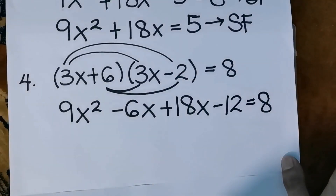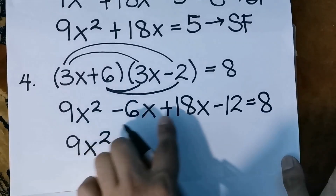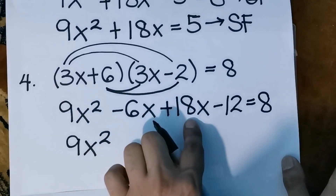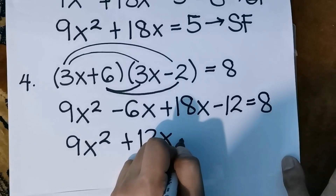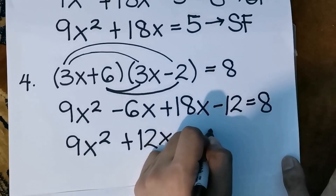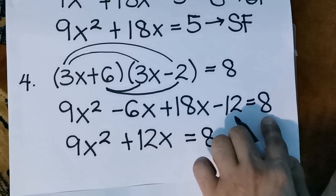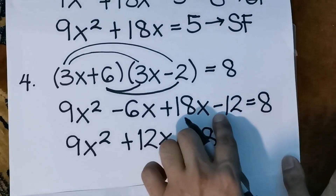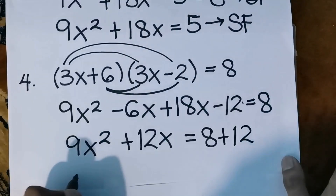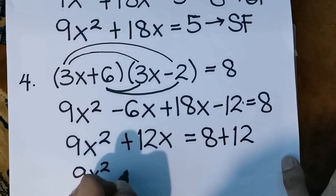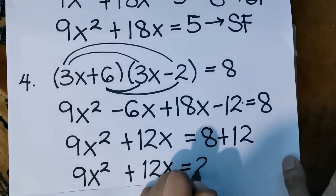Combining like terms to simplify: we have 9x squared, and negative 6x plus 18x is 18 minus 6, which is positive 12x. So 9x squared plus 12x minus 12 equals 8. We move negative 12 to the right side; its additive inverse is positive 12. So 9x squared plus 12x equals 8 plus 12, which gives us 20. This will be the standard form.